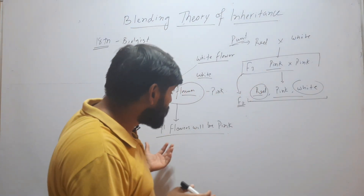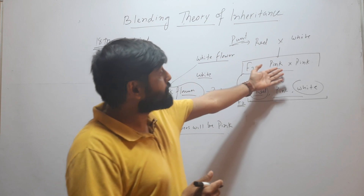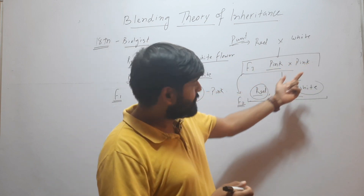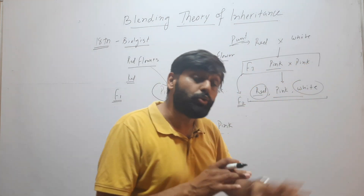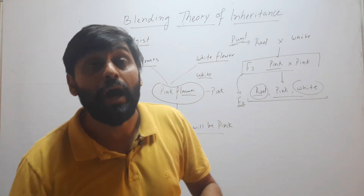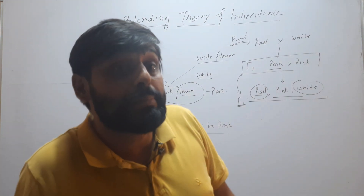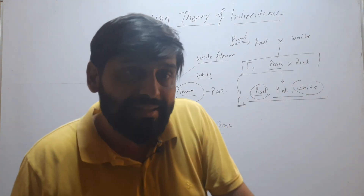But in reality, it is not true. We know that when we cross pink with pink, we get red, pink, and white. So blending theory could not explain how characters that had disappeared previously appeared in the next generation — that's why this theory was discarded.